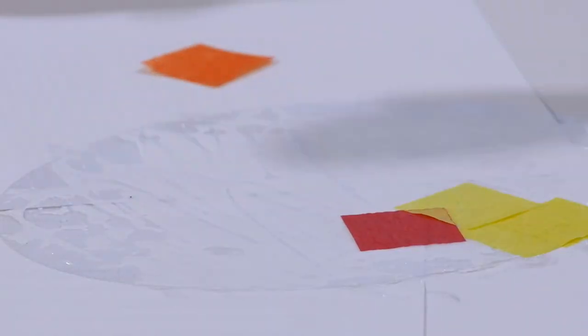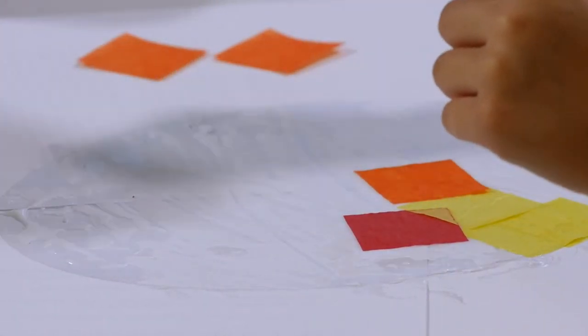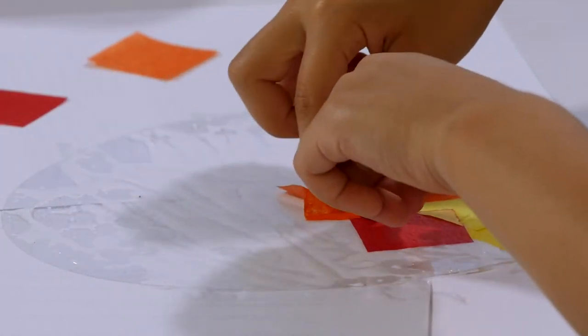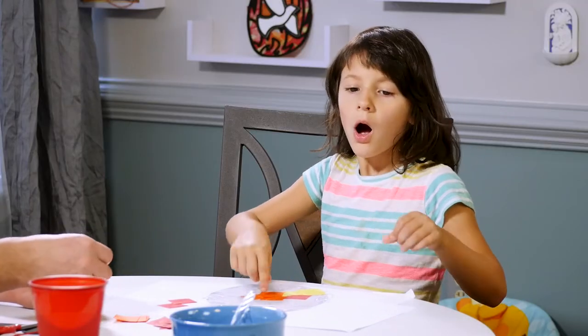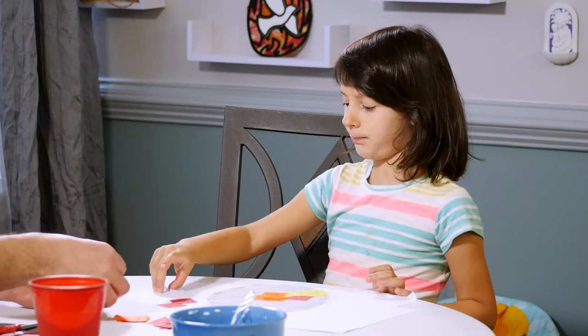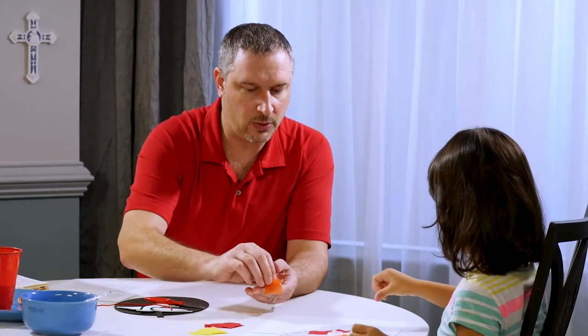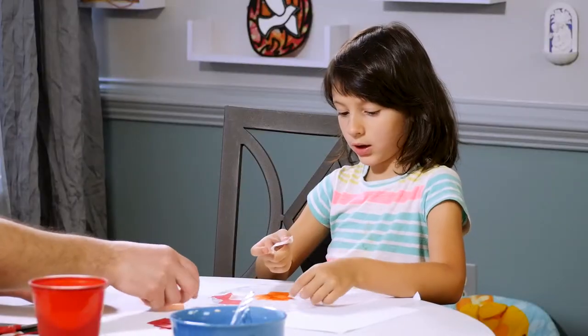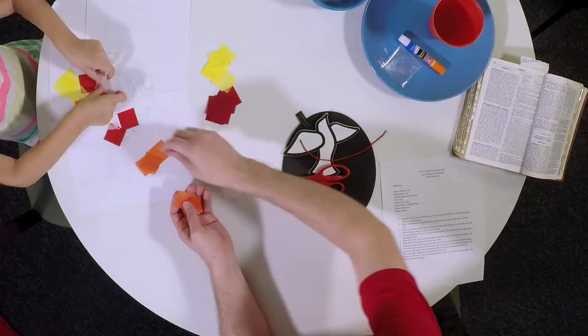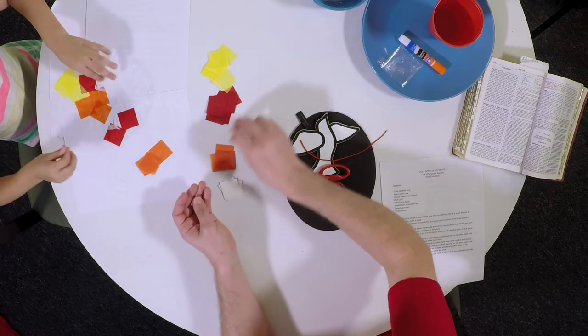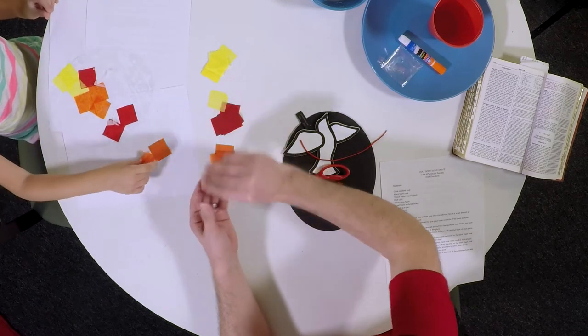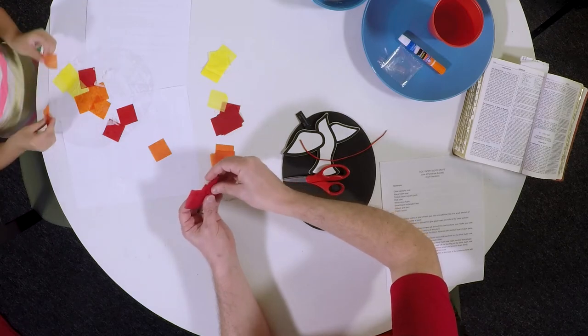Why are we making a Holy Spirit dove today? Well, in the readings today, we read that Jesus visited his disciples after the resurrection in the upper room. And they were all locked away for fear of the Jews. They didn't want the Jews to come and get them. Why? Well, because the Jewish leaders at the time were the ones that said that Jesus should be crucified, and they were going to punish Jesus' followers.